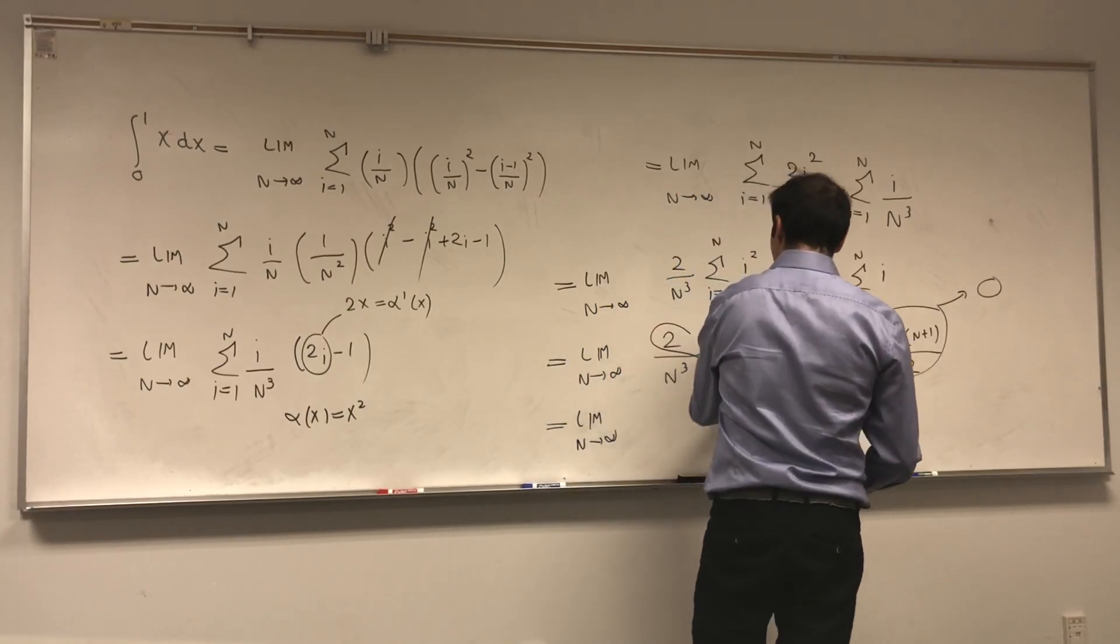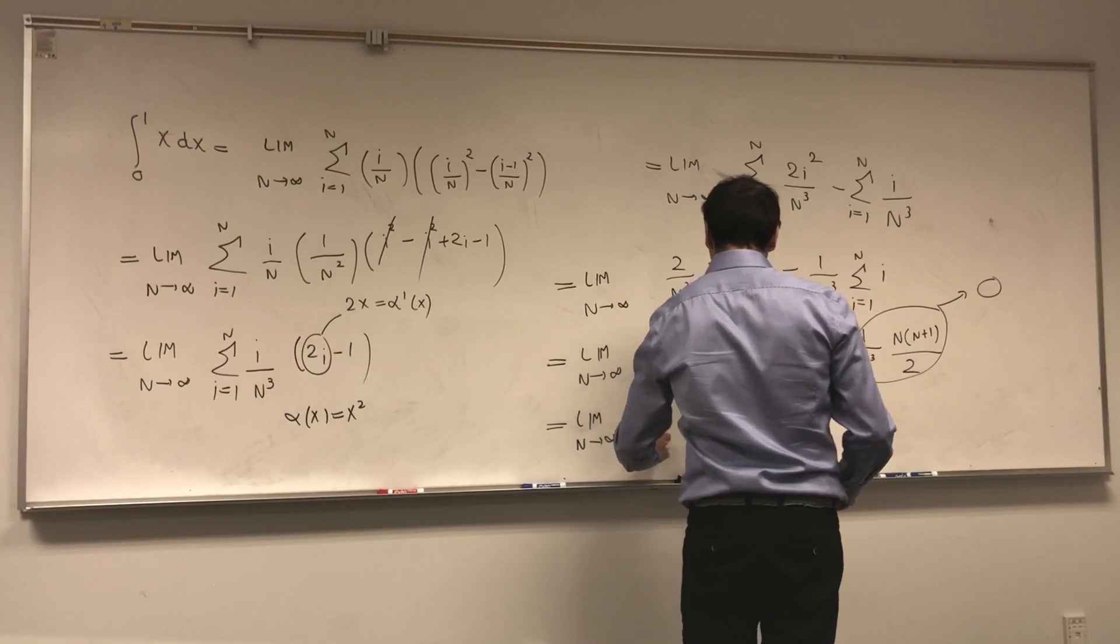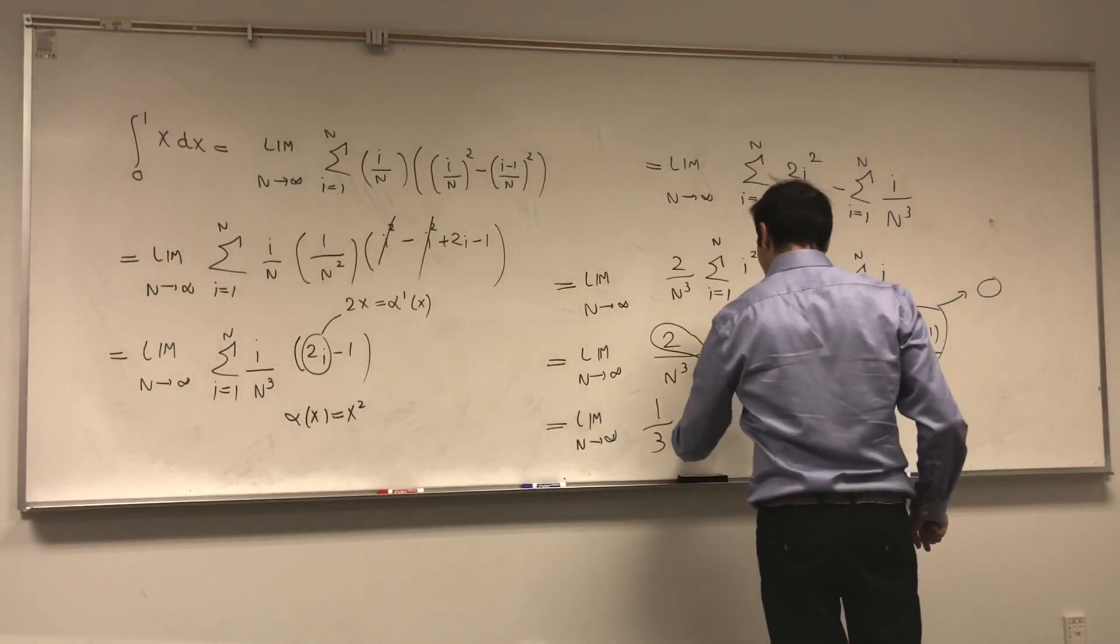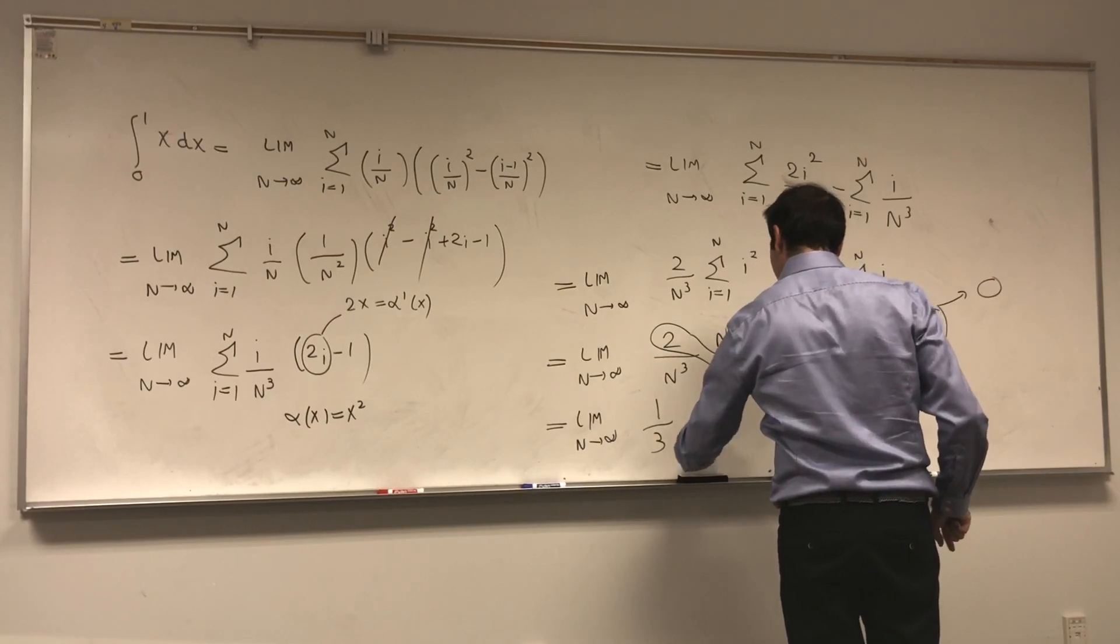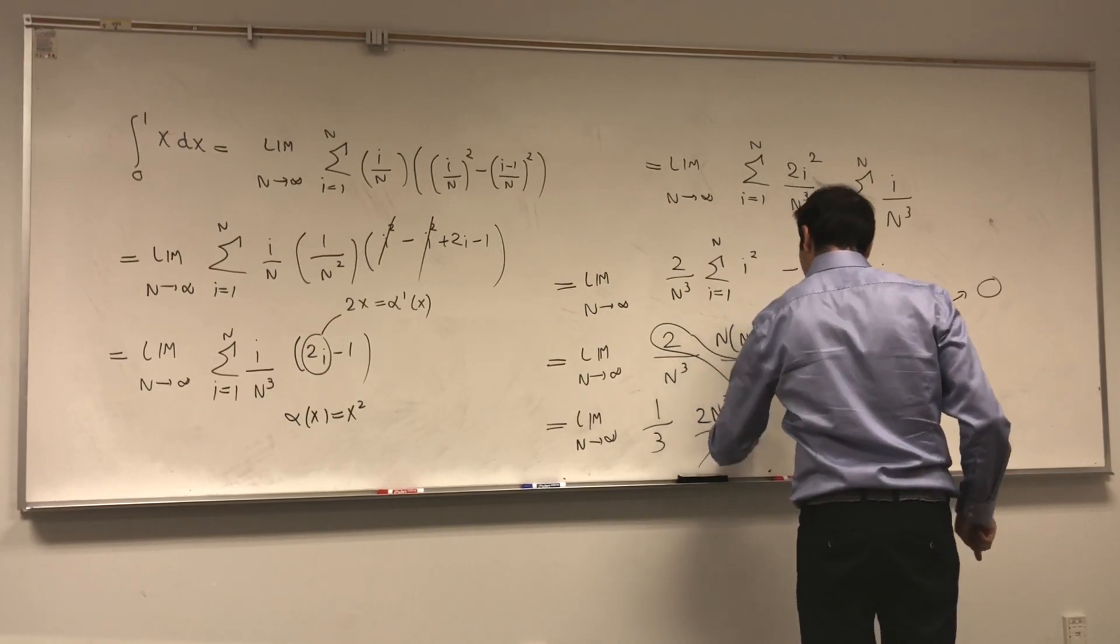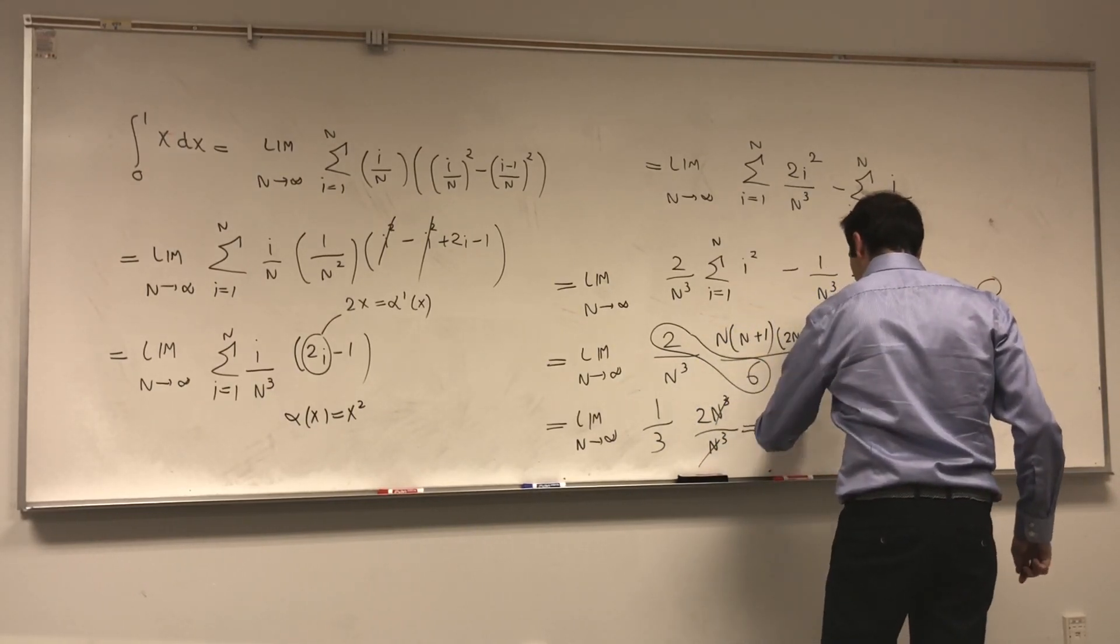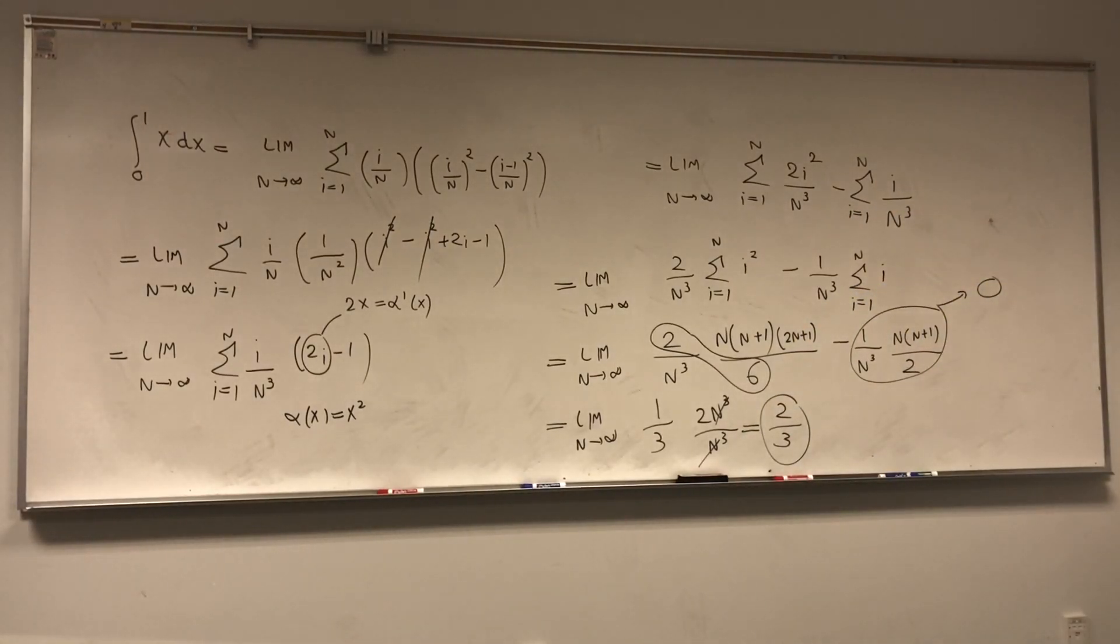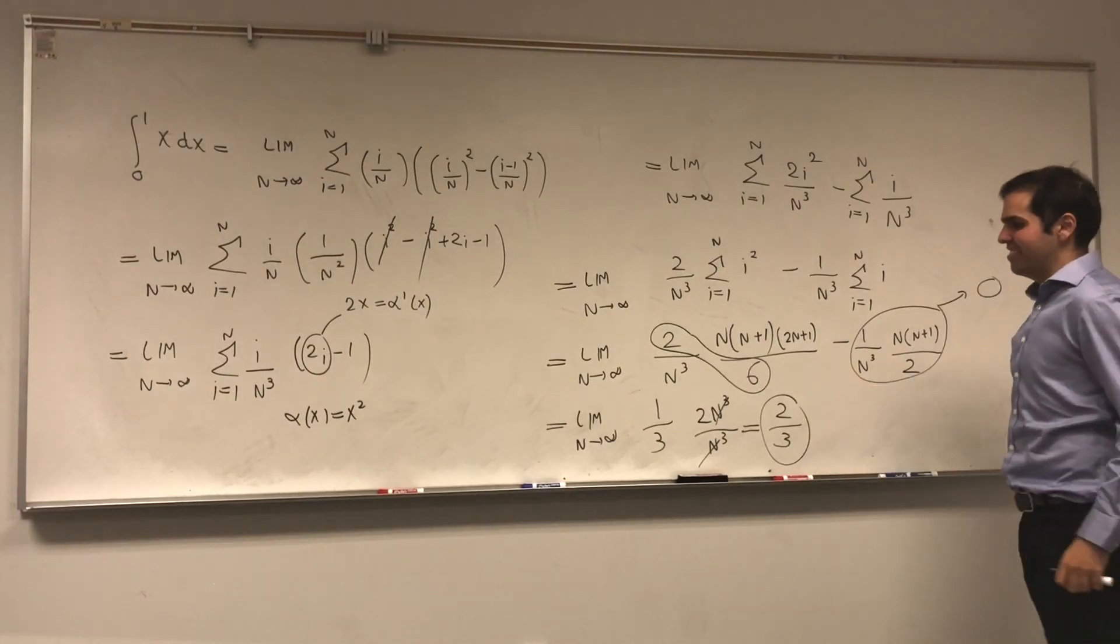And then let's just look at the leading orders here. That's the same as limit n goes to infinity of 2 over 6, which is 1 third. And then you have n times n times 2n, which is 2n cubed over n cubed, which becomes 2 thirds.